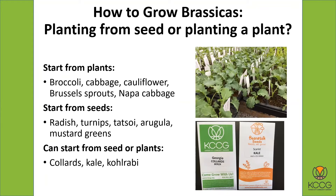Another question that comes up when growing brassicas: do you plant from seed or from transplant? Here are the ones you definitely want to start from plants — you'll either need to buy plants or grow your own under lights. Things like broccoli, cabbage, cauliflower, Brussels sprouts, and napa cabbage are all candidates for planting from a transplant. If you planted a broccoli seed, it would not grow fast enough in time to produce a head before it got too hot. So those are reasons why you want to plant the plants.